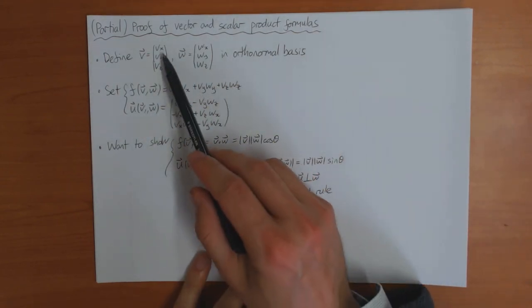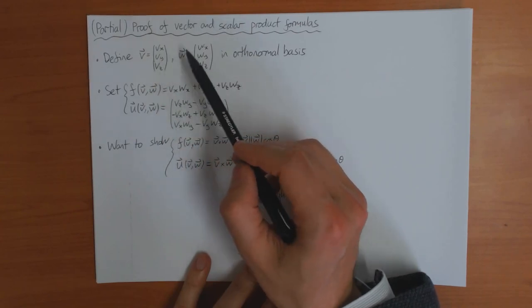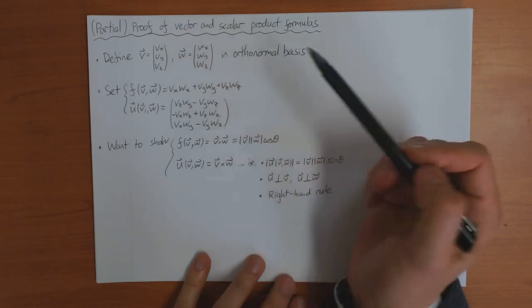So let me just briefly go through it. Suppose you've got, in some orthonormal basis, the vectors v and w with components vx, vy, vz, and wx, wy, wz.